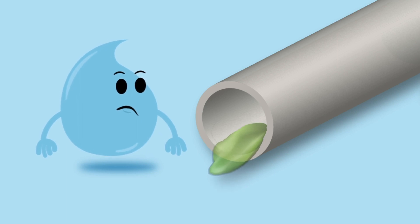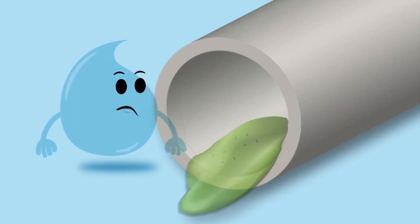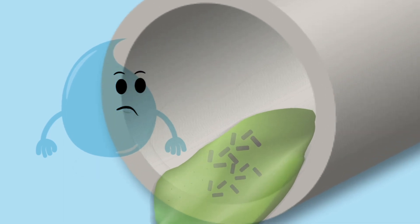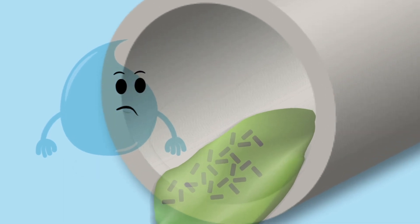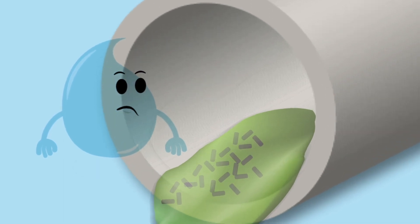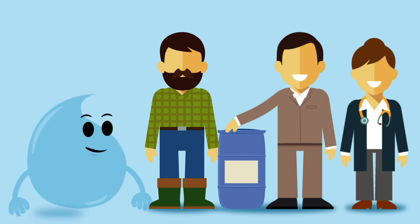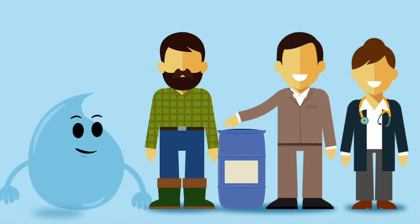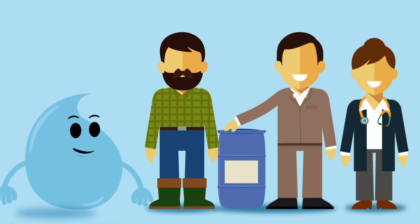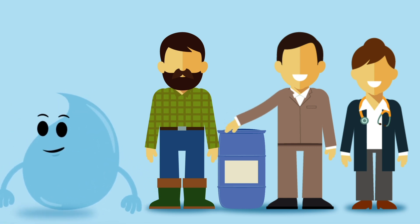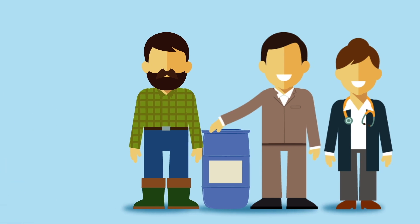Biofilm is a thin but robust, slimy substance that adheres to solid surfaces. Biofilms contain groups of bacteria and other microorganisms. To make sure you use the right product for your farm, seek advice from your supplier or vet.